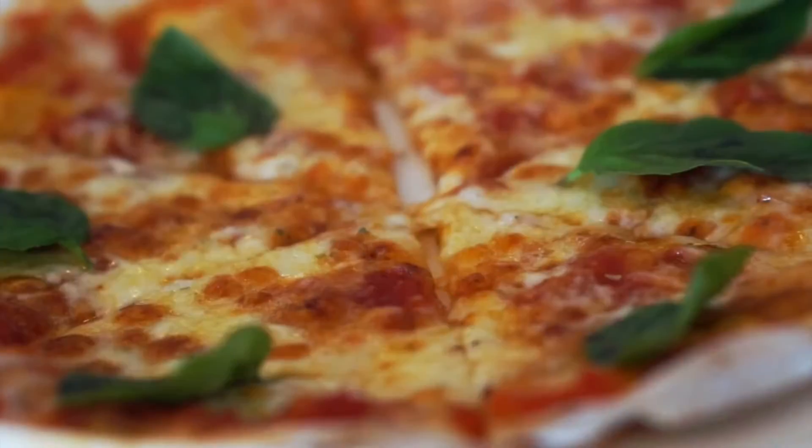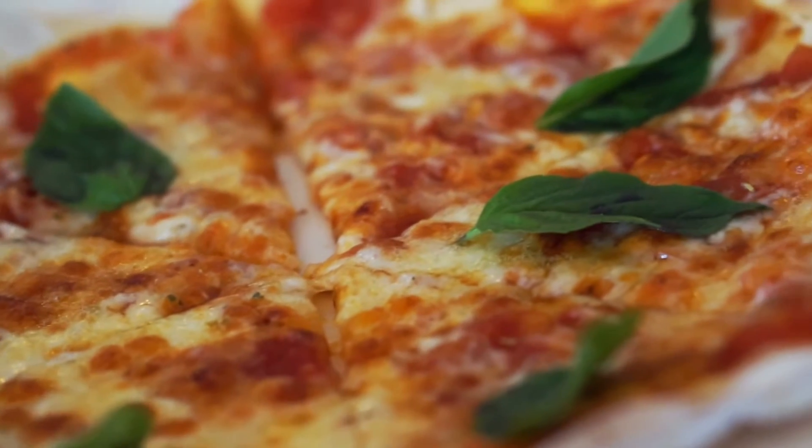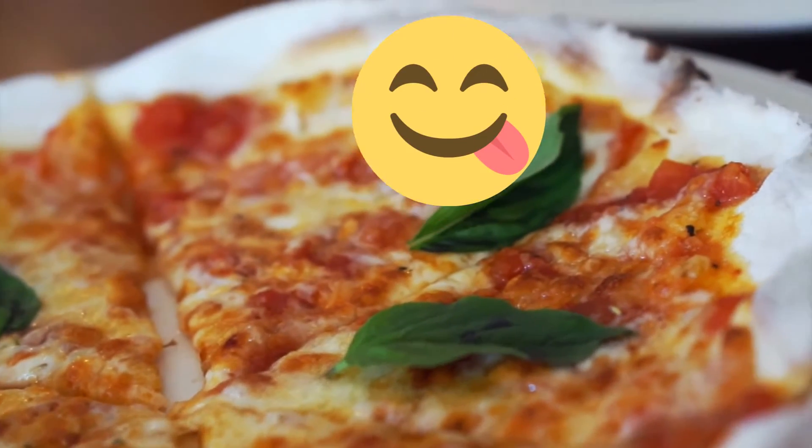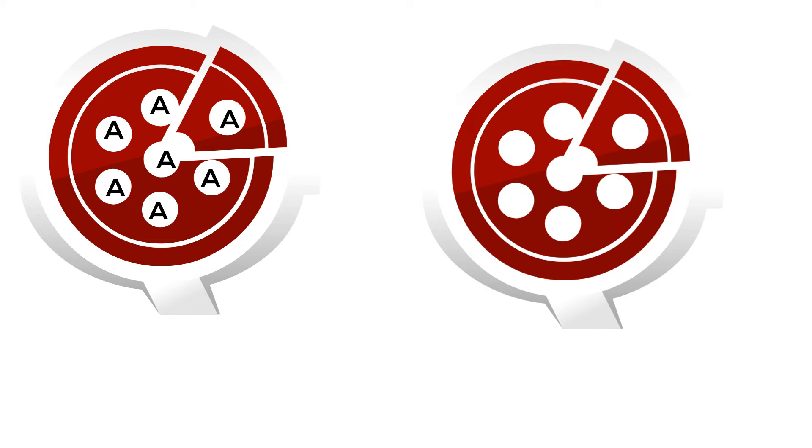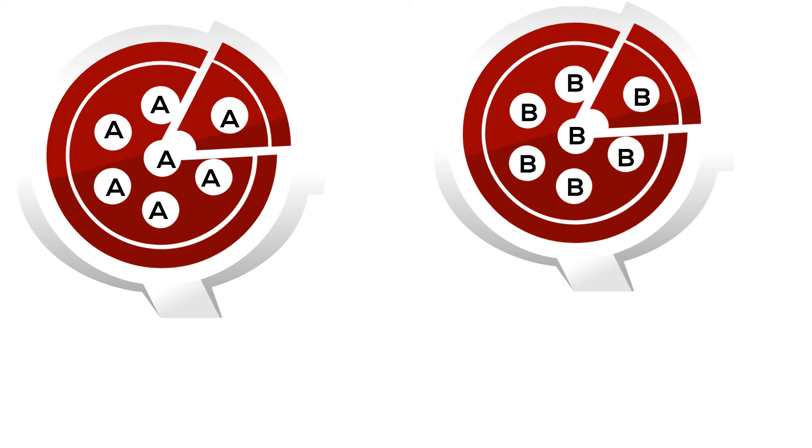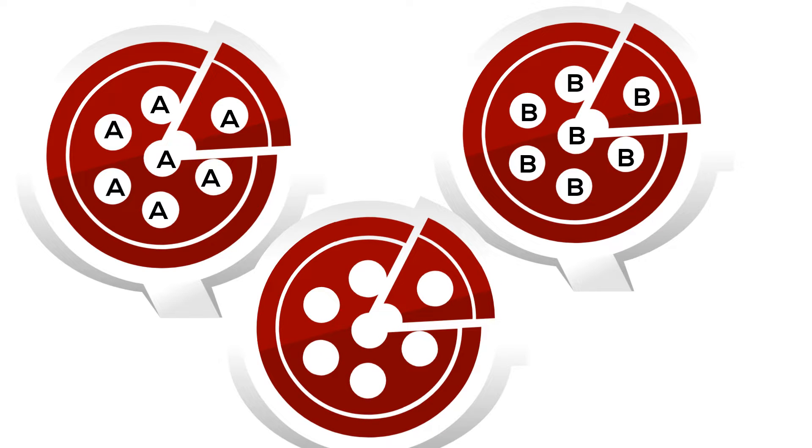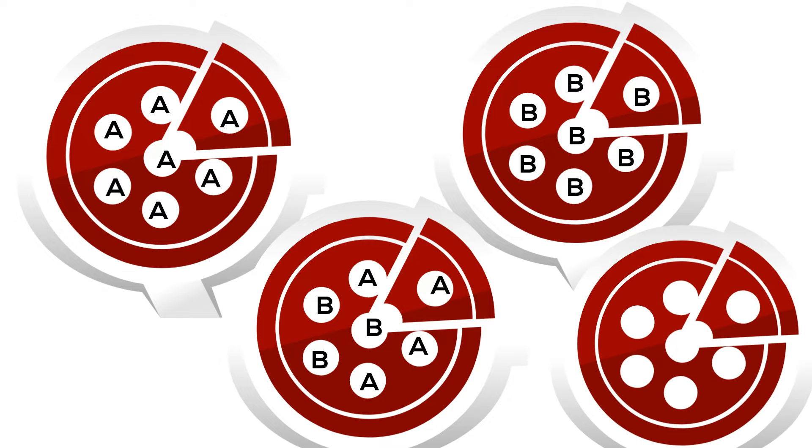I'd like to use a pizza as an analogy to help us understand this concept. So, if you have type A blood, then on your pizza, you only have A toppings. If you are type B, then you only have B toppings. If you're type AB, then you have A and B toppings. And if you're type O, you don't have any toppings. I guess you're a plain pizza.